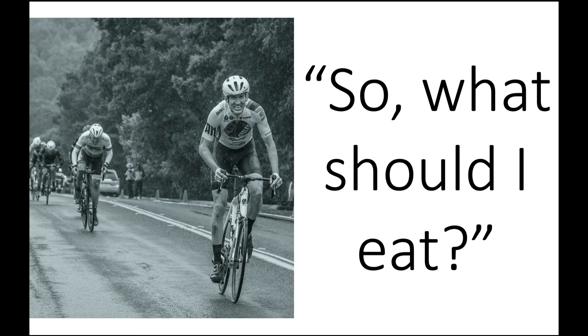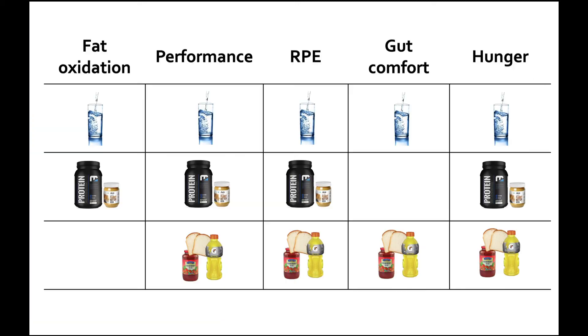So back to this initial question of what should I eat for exercise? Well, in the context of a roughly one hour workout where you might be doing some interval training, what we can say is to increase fat oxidation you could do it in the fasted state or with protein. As far as performance, it doesn't seem to matter. Perceived effort doesn't seem to matter. Gut comfort, you might be better off skipping the protein and either doing it fasted or with carbohydrate. And in terms of hunger, it also shouldn't seem to matter.